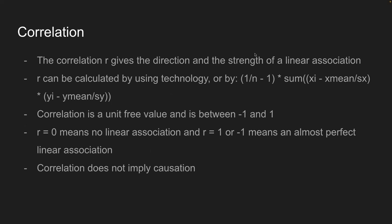The correlation r gives the direction and strength of a linear association. You can calculate it using technology or by the formula: 1 over (n minus 1) times the sum of [(xi minus x-bar) over sx] times [(yi minus y-bar) over sy]. Correlation is a unit-free value always between -1 and 1. A value closer to 0 means no linear association, while closer to 1 or -1 means an almost perfect linear association. Always note that correlation never implies causation — to determine causation you need a well-defined experiment.